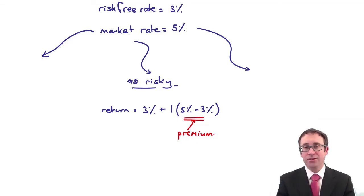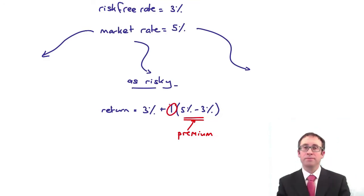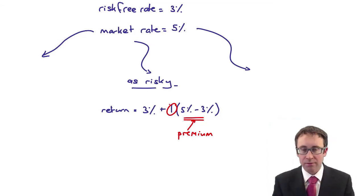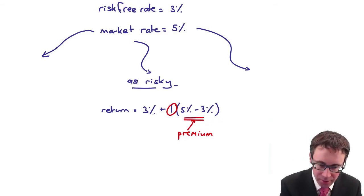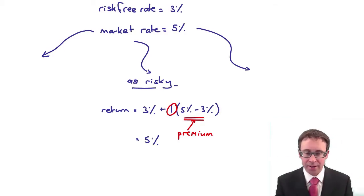So you've got effectively a premium above what you have for investing in your risk-free returns. And therefore, because it is as risky, the beta factor that we have is 1. So if I do 3 plus 1 times 5 less 3, 5 less 3 is 2, 1 times 2 is 2, plus 3 is 5. The return that you get is 5%, which is what we wanted.